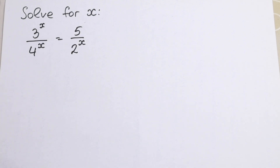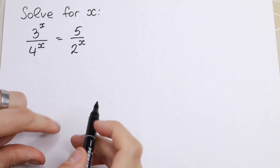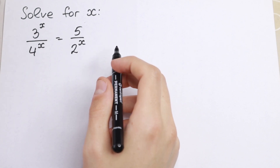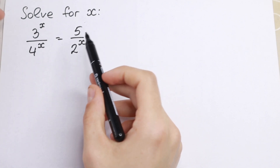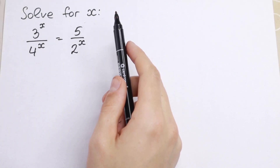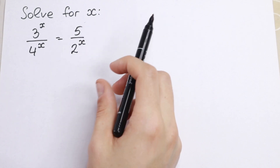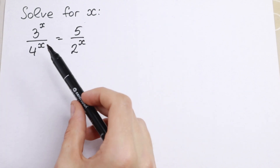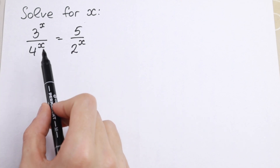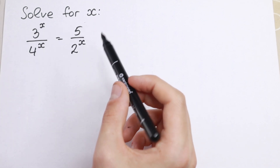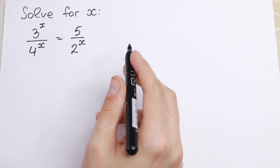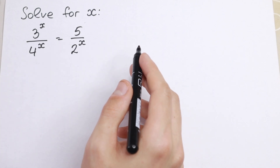Hello everyone, and welcome back to MathMode. In this video we are going to solve this interesting exponential equation. You can see we have a lot of different bases and a lot of x's, and at first sight this equation is a really hard one, because it's not like one base and not like one x. How can we solve this interesting equation? I want to show you a really good trick.